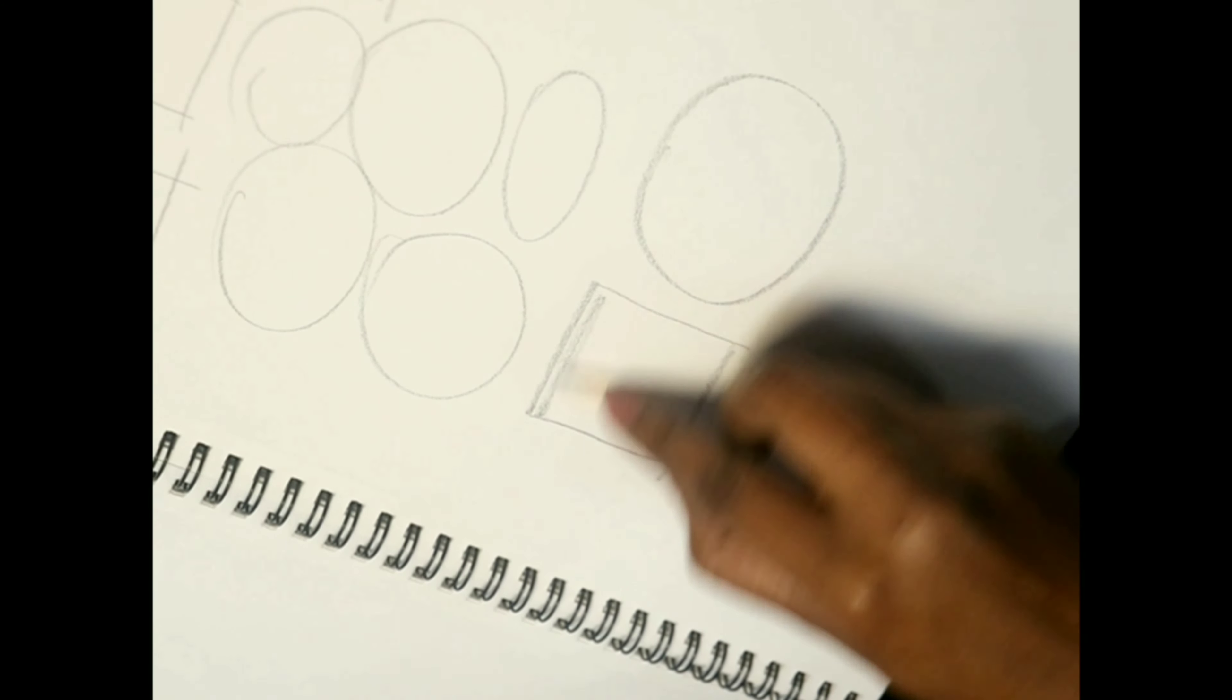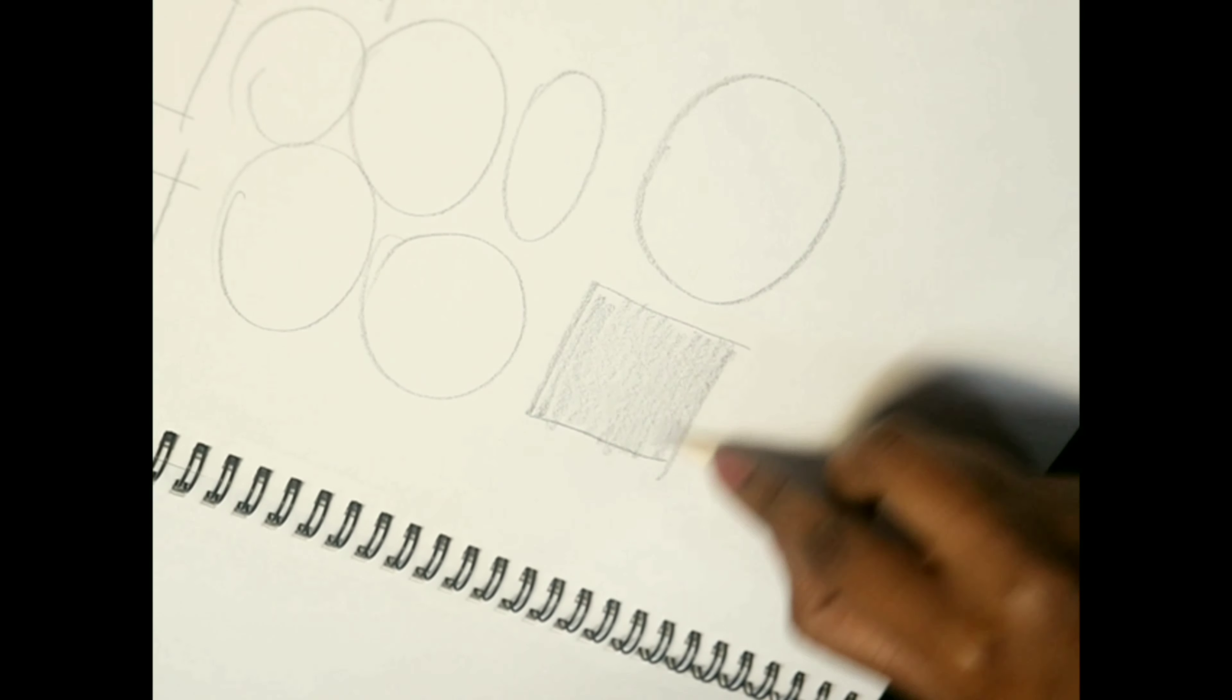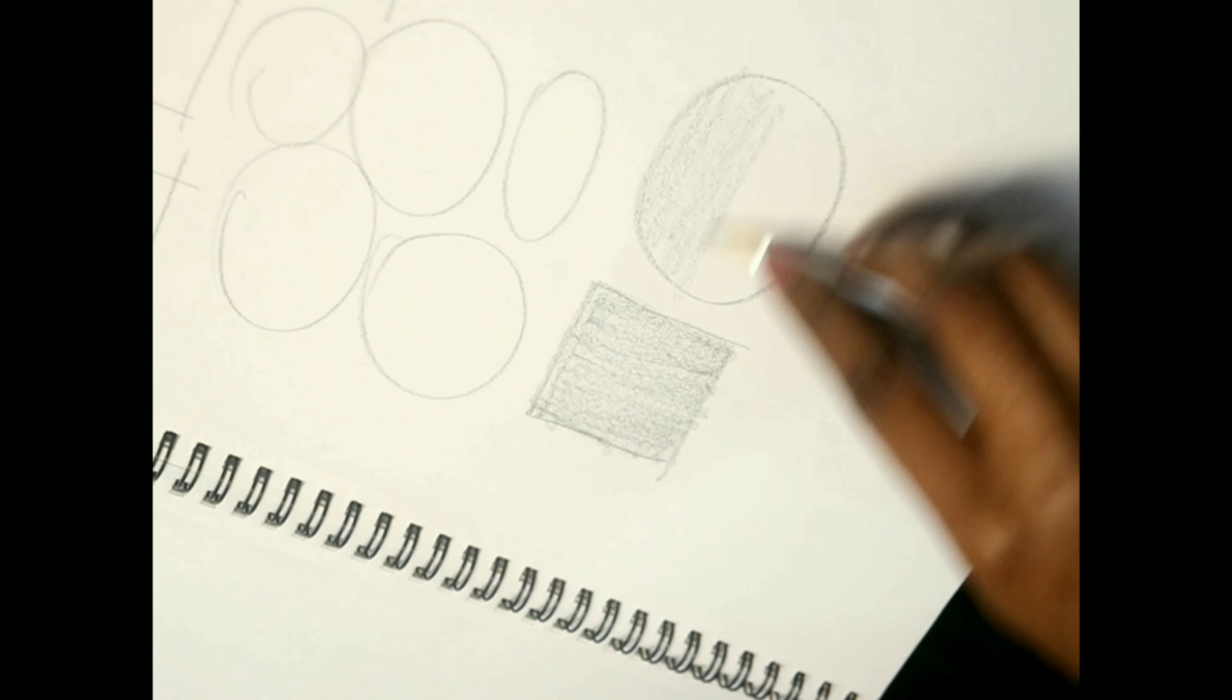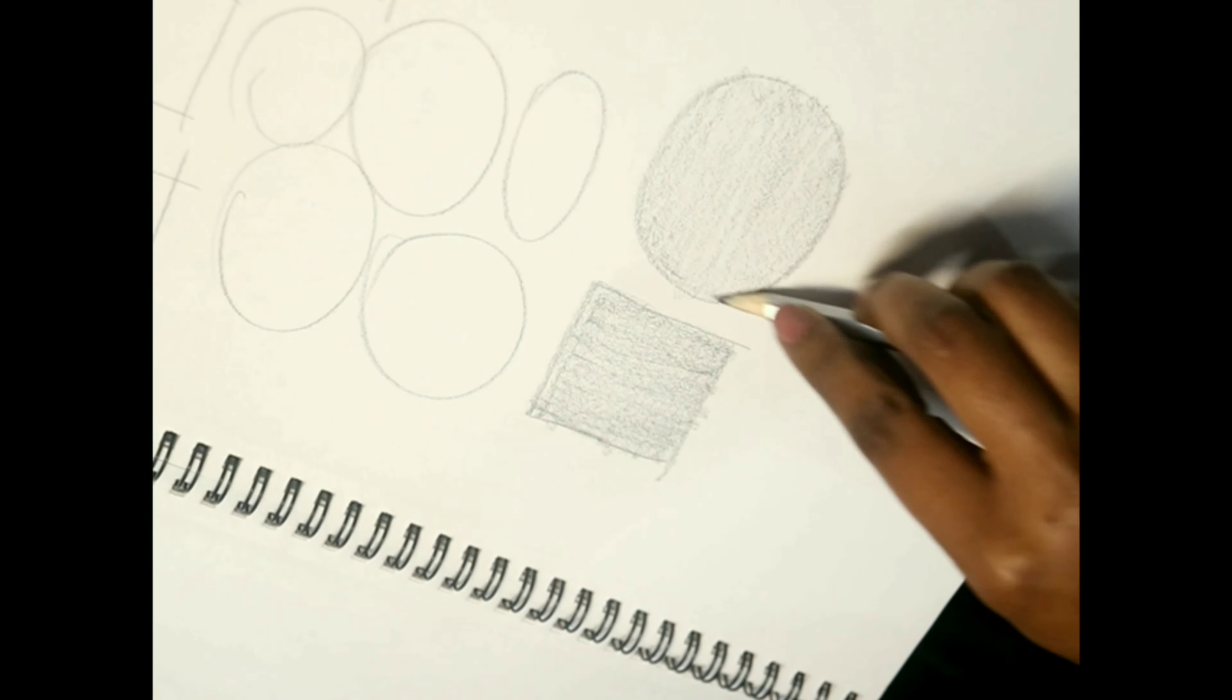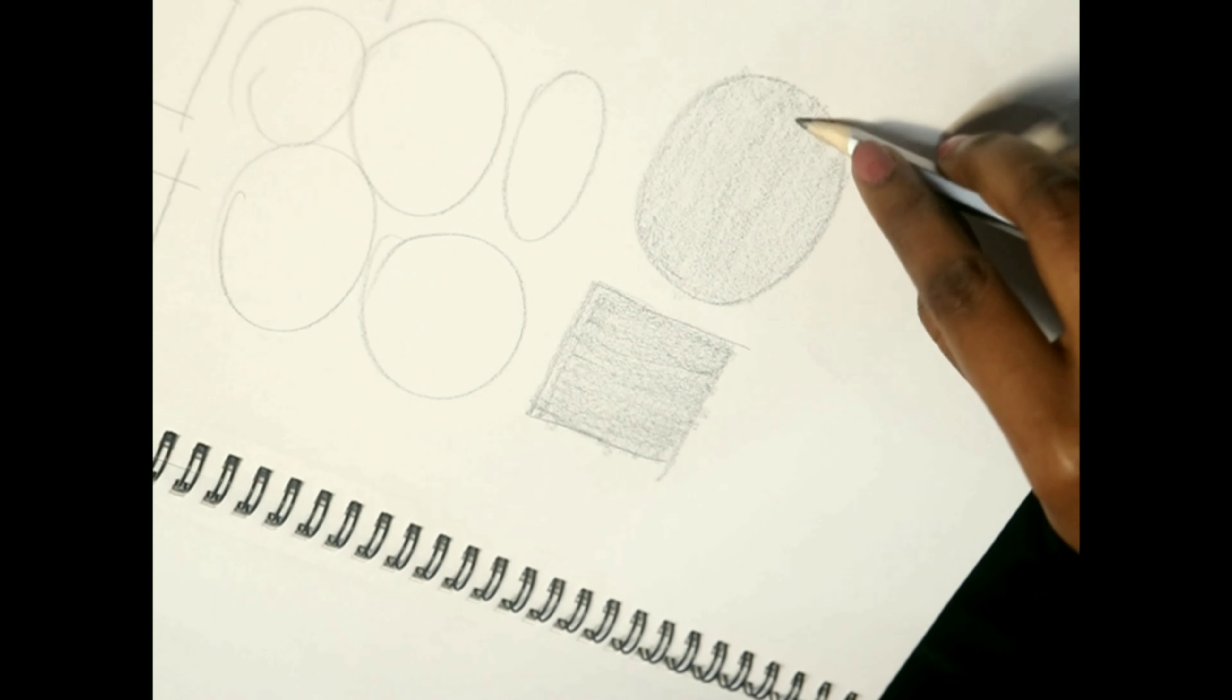To practice shading larger areas, you can draw circles and rectangles and fill the area with clean tones. Try to maintain the consistency of the strokes and you can get even tone, obviously after a lot of practice.